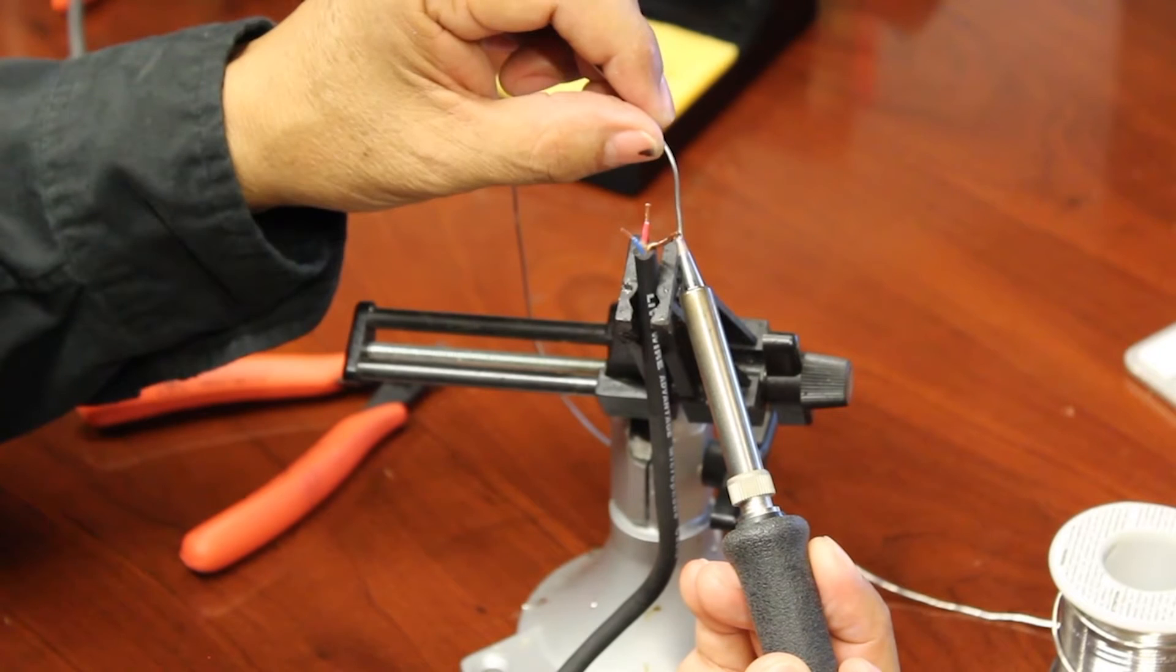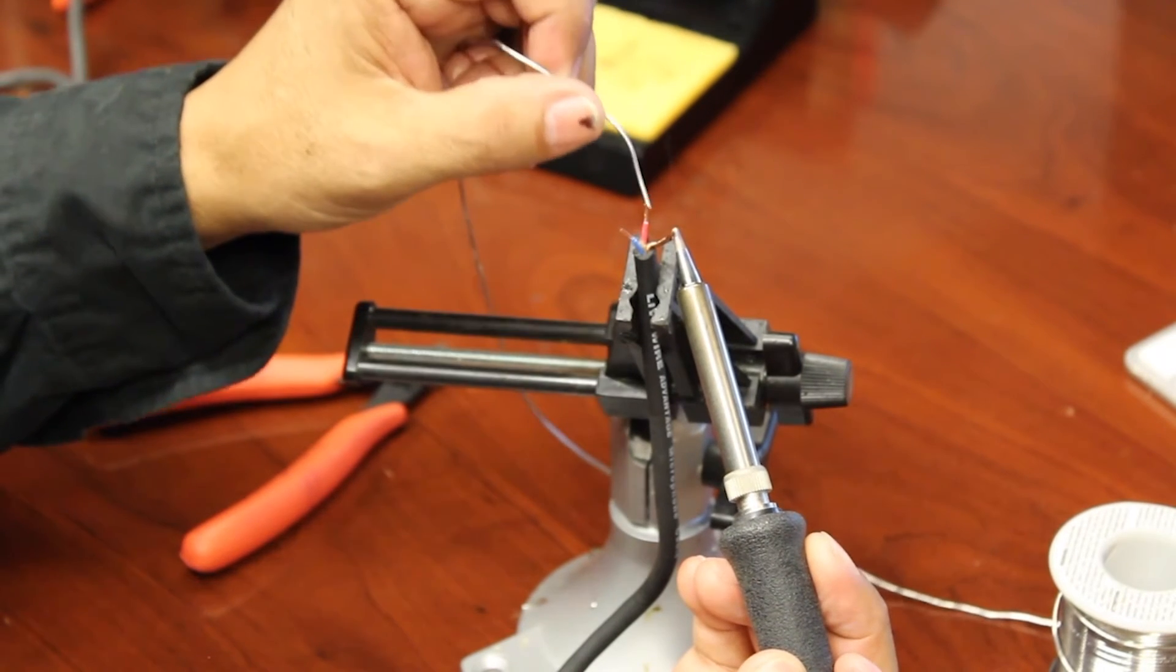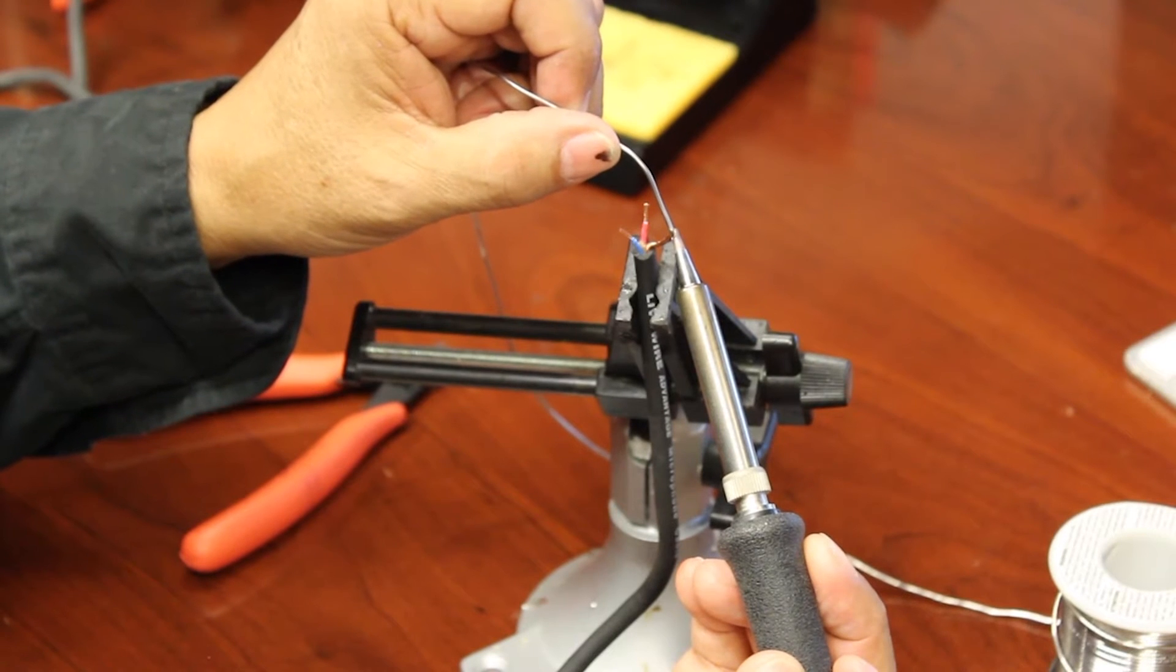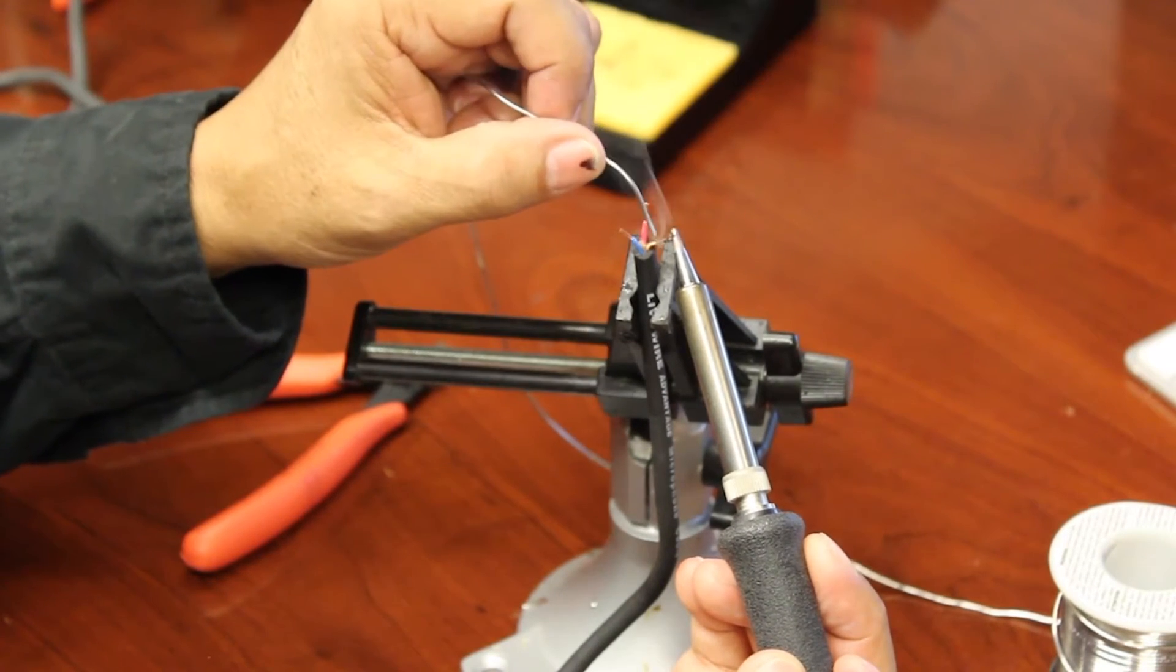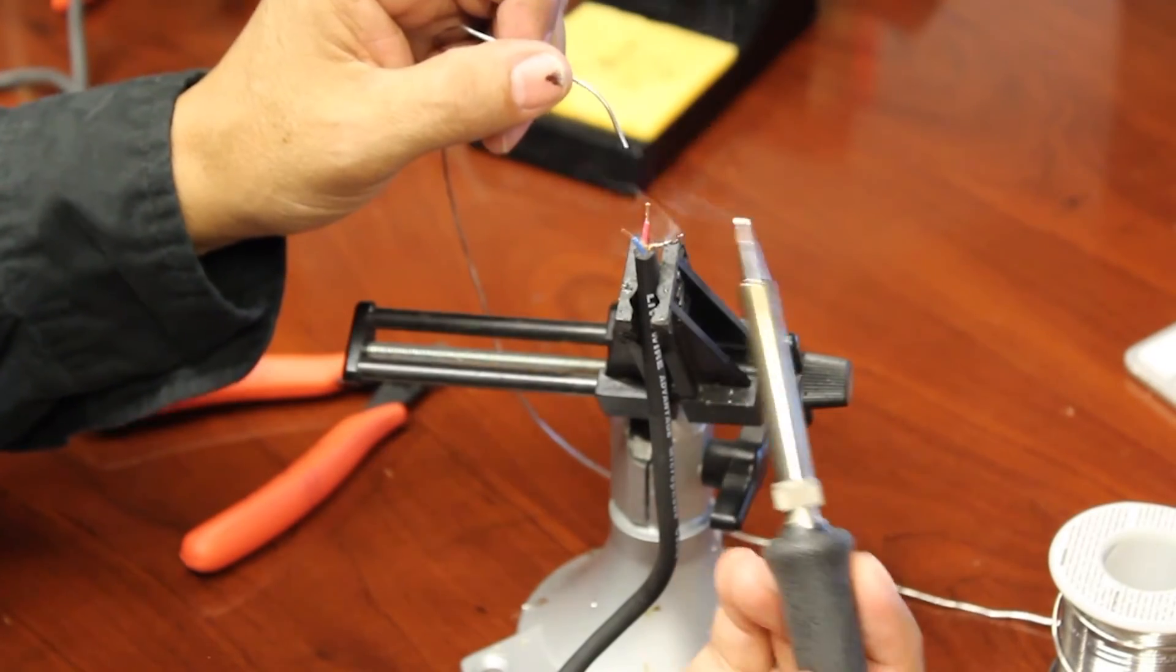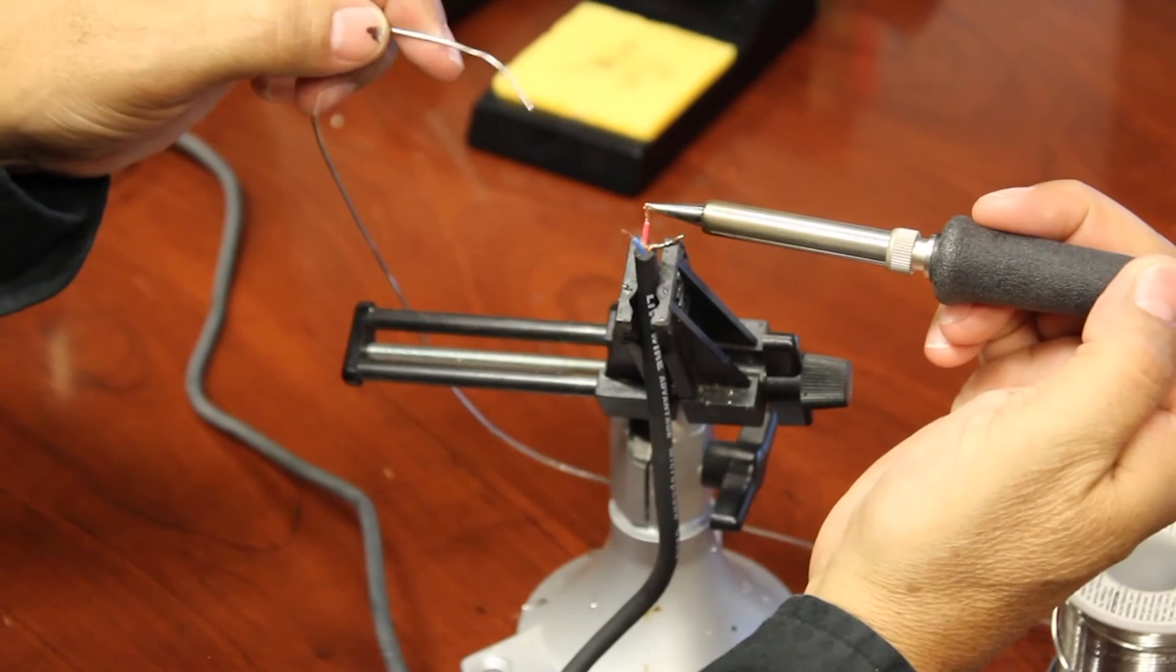And then put the solder on it. That way you know the solder will stick or is sticking to the wire. So heat the wire up and then go ahead and apply the solder to it. Go ahead and repeat this process for the other wires in the cable, and let's move on to the next step.